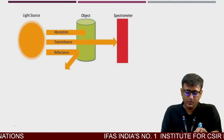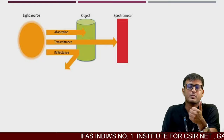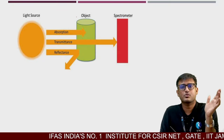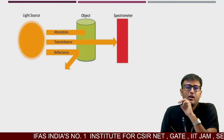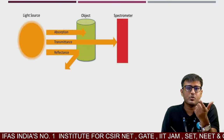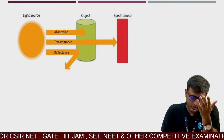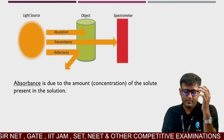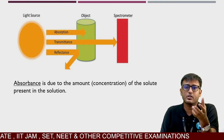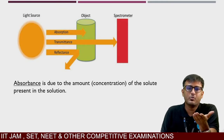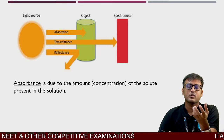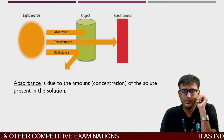Yahan pe generally do concepts hote hain — absorbance and transmittance. Yahan pe koi object hai, humne ek light source ko pass karwaya object ke through. Ab kuch particular portion hai jo absorb hoga, aur baaki ka jo portion hai woh transmit hoga. Absorbance is due to the amount or concentration of the solute present in the solution. Jitna zyada biomolecule hoga, uske dependent uska absorbance rahega.